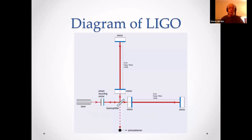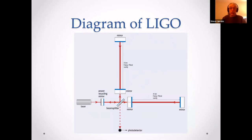Here is a more advanced diagram of LIGO. There are four mirrors, two in each arm, and there's a Fabry-Perot cavity in each one. The photo detector is at the bottom, along with a beam splitter and laser off to the left.